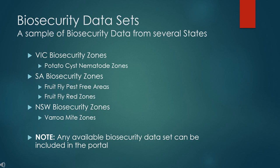Example biosecurity zones in other states include potato cyst nematode in Victoria, fruit fly in South Australia, and varroa mites in New South Wales.